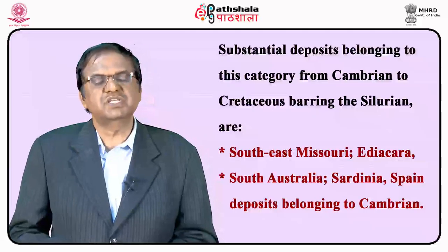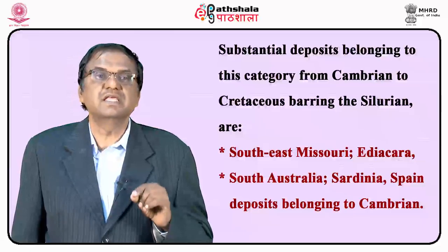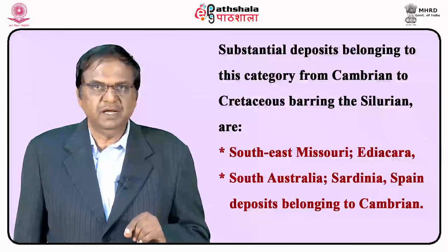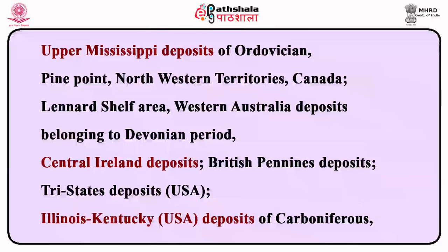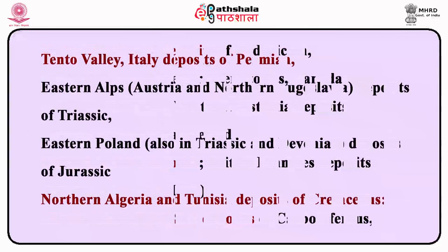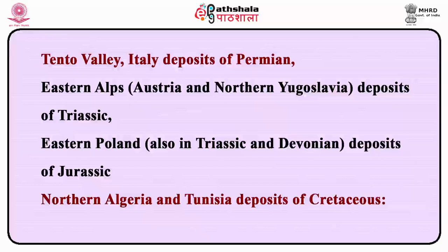Substantial deposits of this category range from Cambrian to Cretaceous. These include Southeast Missouri and Ediacara, South Australia and Sardinia, Spain deposits of Cambrian; Upper Mississippi deposits of Ordovician; Pine Point, Northwest Territories, Canada and the Lennard Shelf, Western Australia deposits of Devonian; Central Ireland, British Pennines and Tri-State USA deposits, Illinois and Kentucky deposits of Carboniferous; Trento Valley, Italy deposits of Permian; Eastern Alps deposits of Triassic; Eastern Poland deposits of Jurassic; and Northern Algeria and Tunisia deposits of Cretaceous.